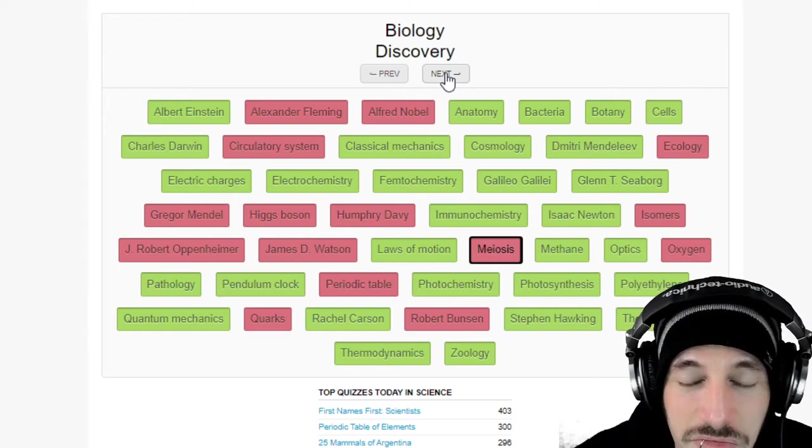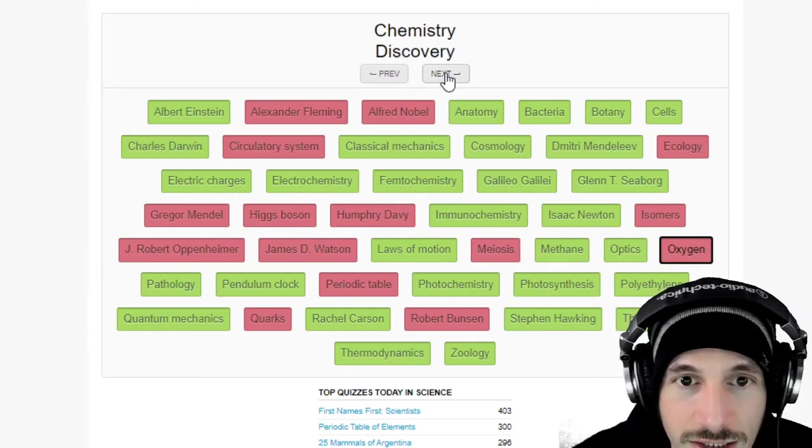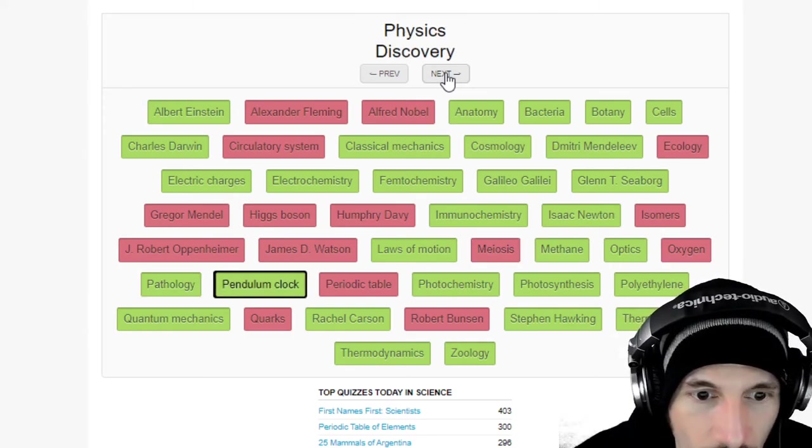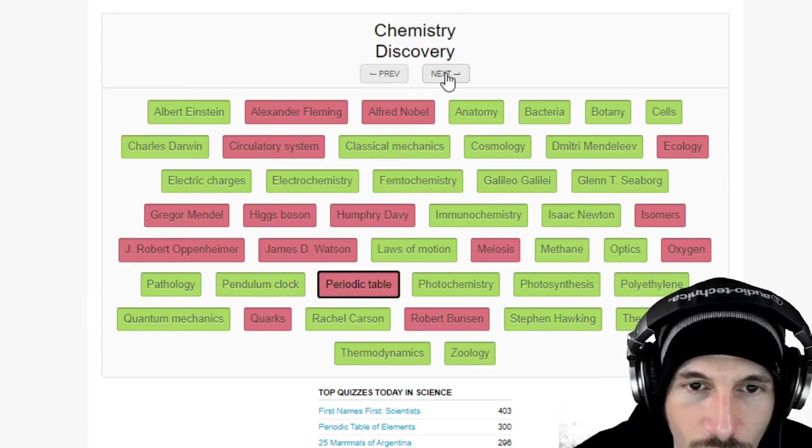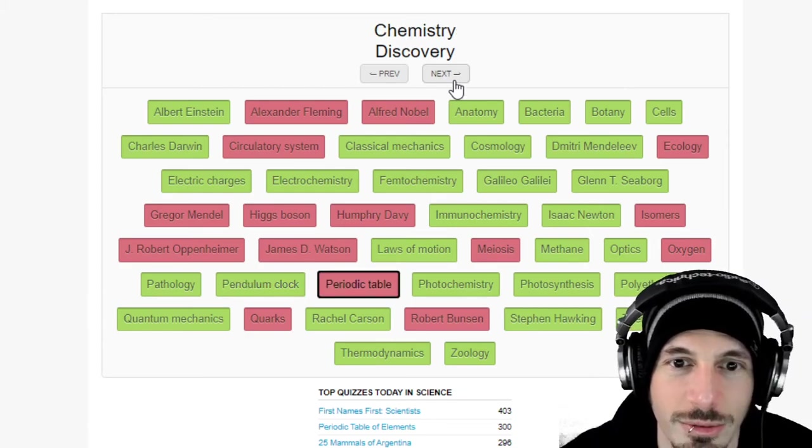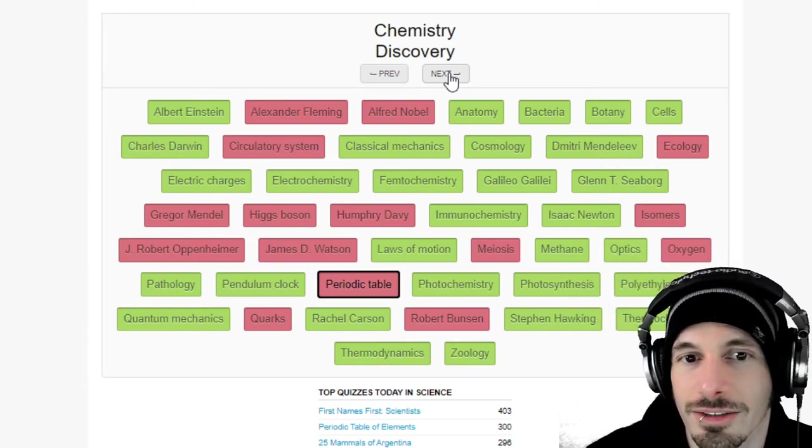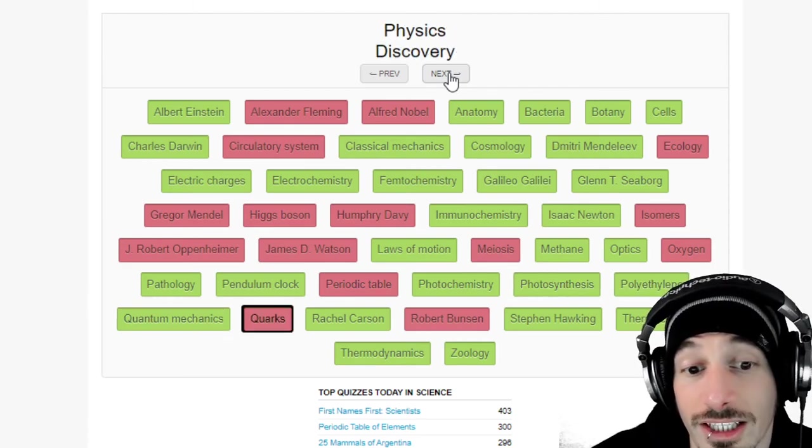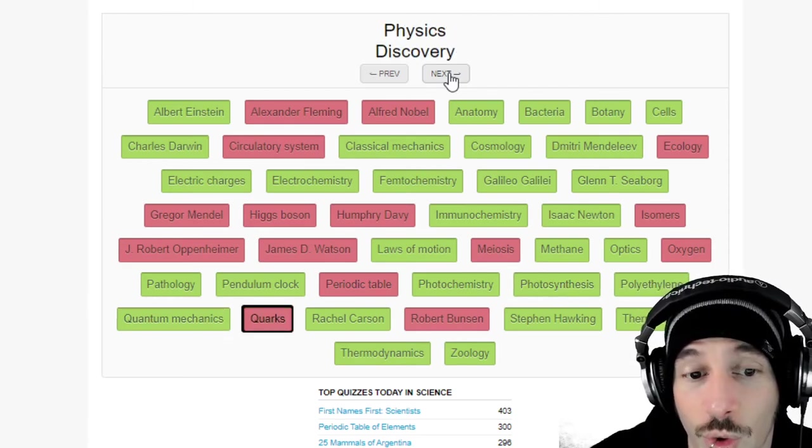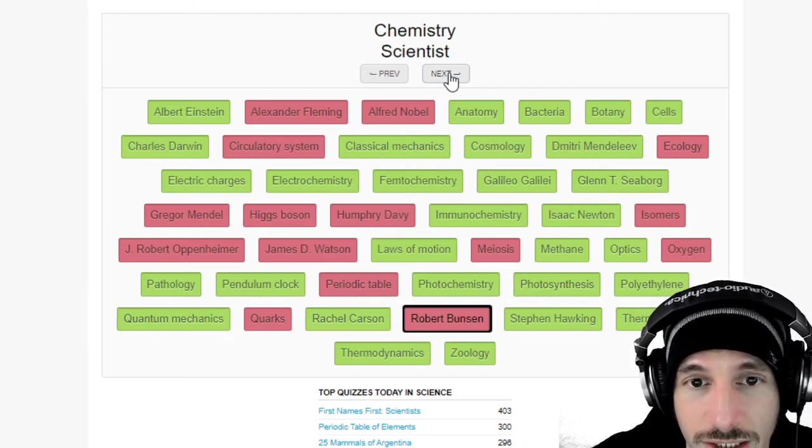Meiosis, biology discovery, I would have guessed that. Oxygen, chemistry discovery. Periodic table, chemistry, oh I wasn't even thinking about that as a discovery to be honest. I really, I was just thinking about that as something having to do with it but not like as a discovery, like they discovered the periodic table. Quarks is a physics discovery, I would have clicked on that eventually.